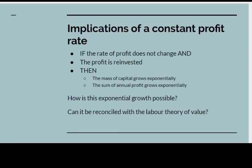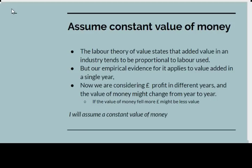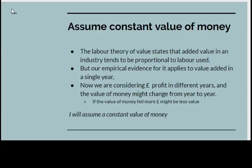So what are the implications of a constant profit rate? If the rate of profit doesn't change and all the profit is reinvested, then the mass of capital must grow exponentially, and from that the sum of annual profit must also grow exponentially. The question is how can this exponential growth be possible? Can we reconcile such exponential growth in profit with the labour theory of value? The labour theory of value states that the added value in an industry will be proportional to the labour that it uses, or at least tend to be proportional to the labour that it uses.